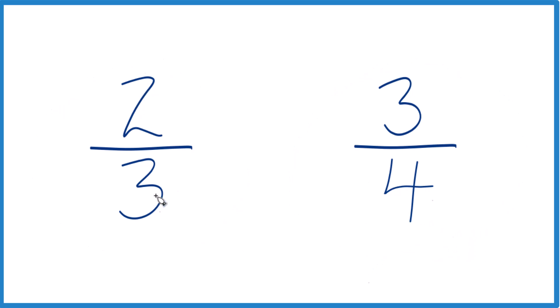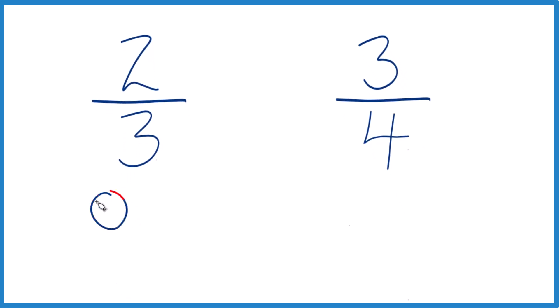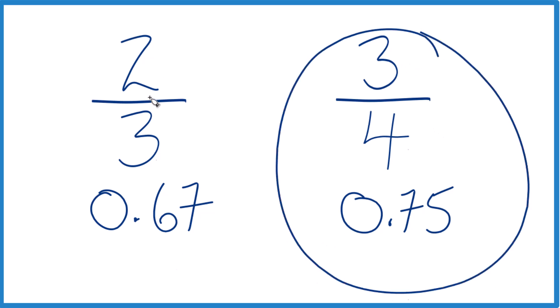So we could just divide two by three on a calculator and we get 0.66666, keeps going, let's call it 0.67. Three divided by four is 0.75, and you can see three-fourths of a cup, that's larger than two-thirds of a cup.